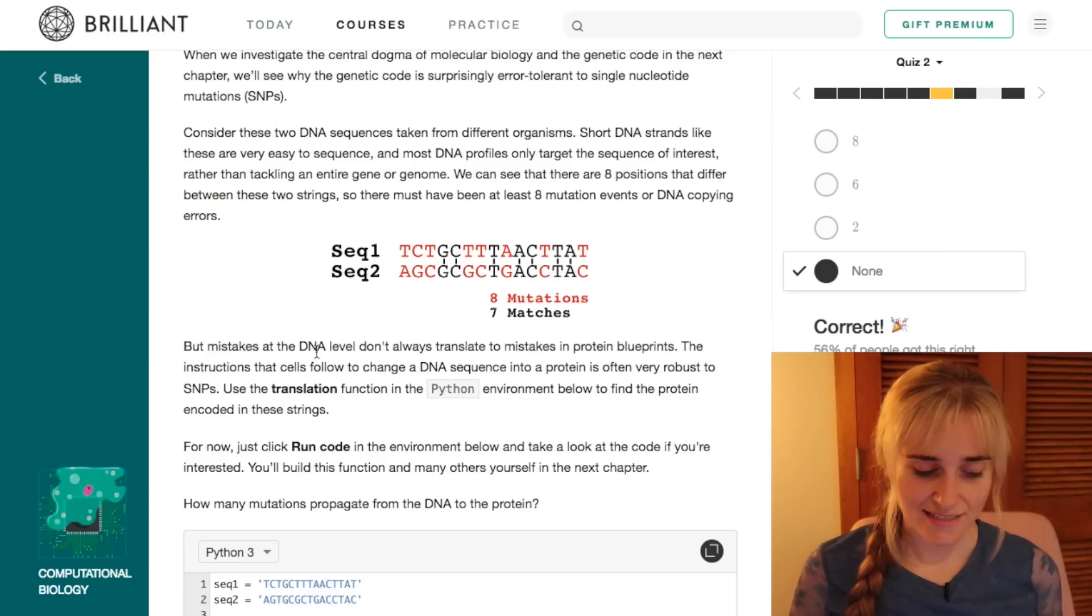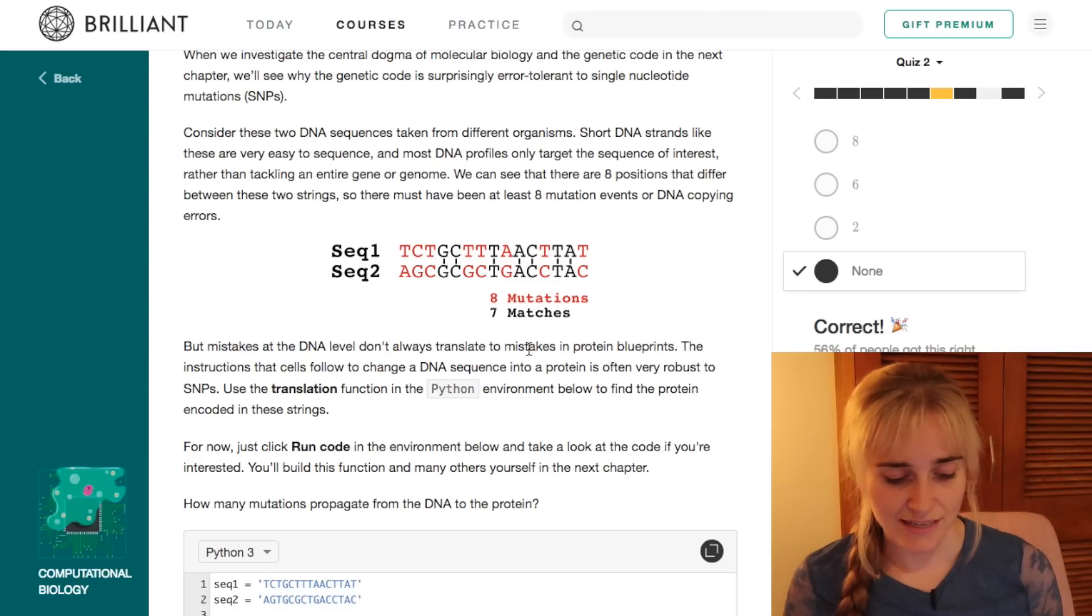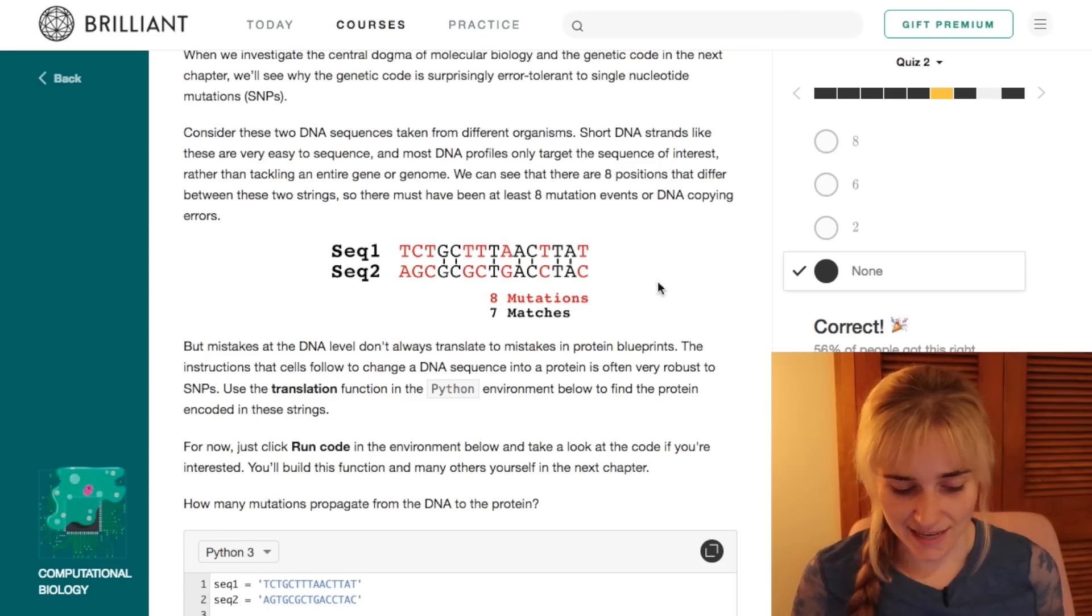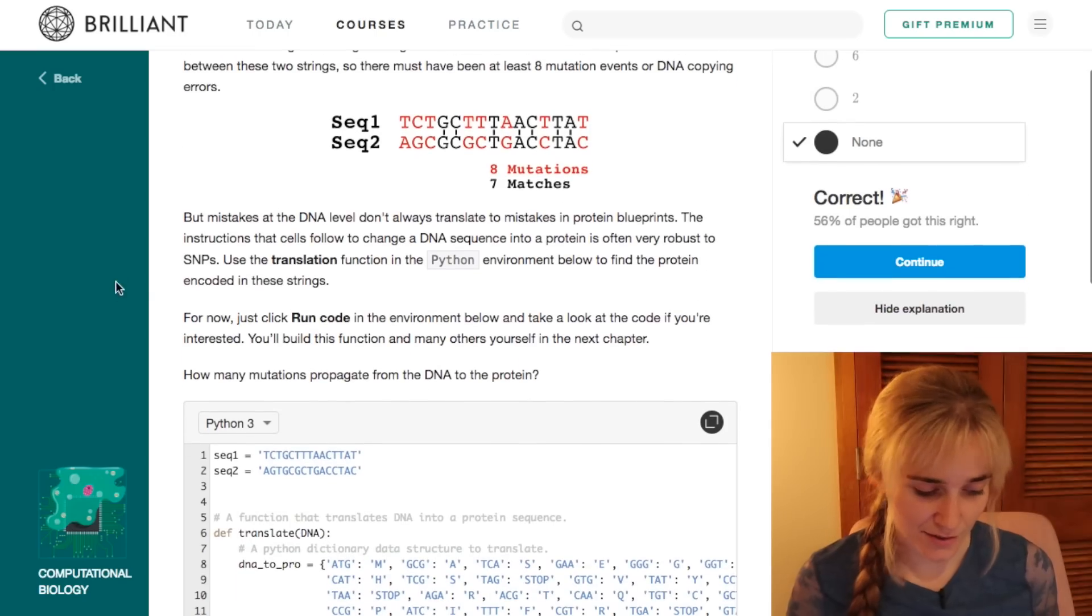It goes on to say that mistakes at the DNA level don't always translate to mistakes in protein blueprints. So this DNA here is coding for a protein to be made in a cell. In fact, the instructions that cells follow to change a DNA sequence into a protein is often very robust to these mutations.